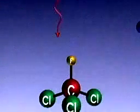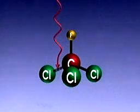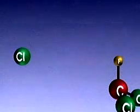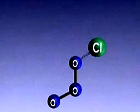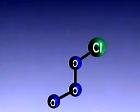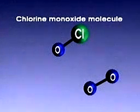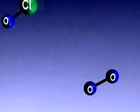First, high energy ultraviolet rays break chlorine atoms free from the CFC molecule. These free chlorine atoms can react with other molecules in the atmosphere. When a chlorine atom reacts with an ozone molecule, it steals one of the ozone molecule's three oxygen atoms, forming a molecule of chlorine monoxide. The remaining two oxygen atoms form an ordinary oxygen molecule.